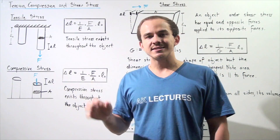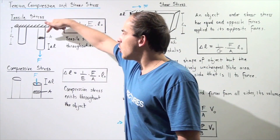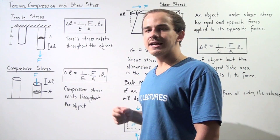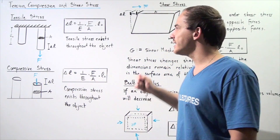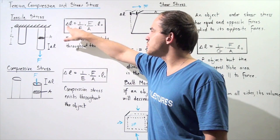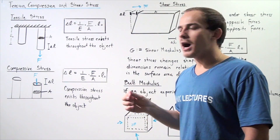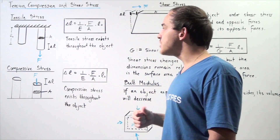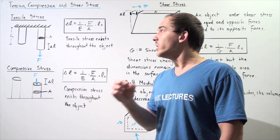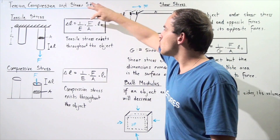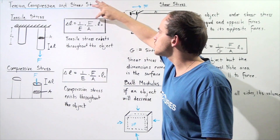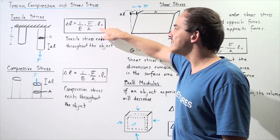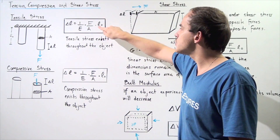The force is known as tensile force. Now if we know the cross-sectional area of the column, given by A, we can calculate what the change in L is — the elongation distance of our object. The change in L is equal to the product of 1 over Young's modulus E, which depends on the composition of the object. For example, a wooden object and a steel object will have different quantities of E. So we take 1 over E multiplied by force divided by area — which is simply the tensile stress — multiplied by our initial length L-naught.